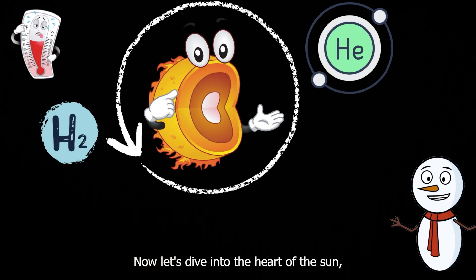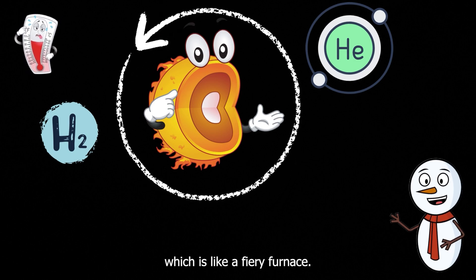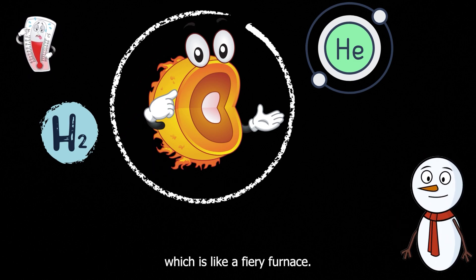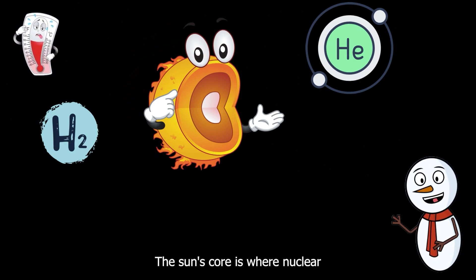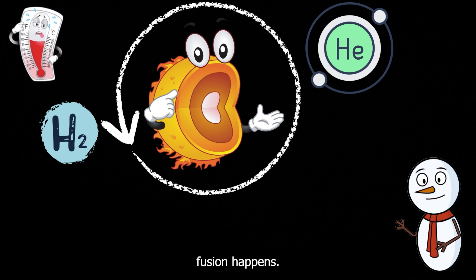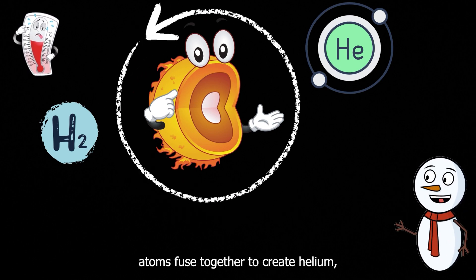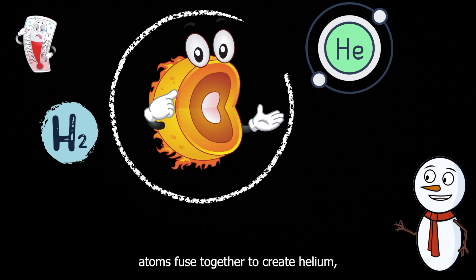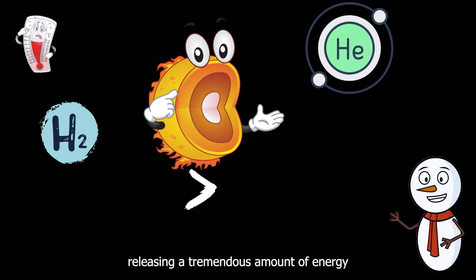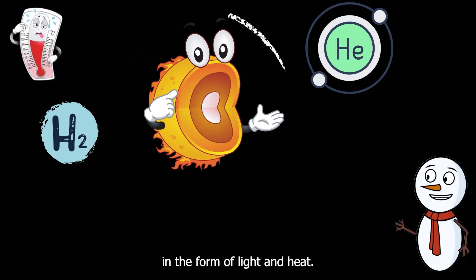Now, let's dive into the heart of the Sun, which is like a fiery furnace. The Sun's core is where nuclear fusion happens. Hydrogen atoms fuse together to create helium, releasing a tremendous amount of energy in the form of light and heat.